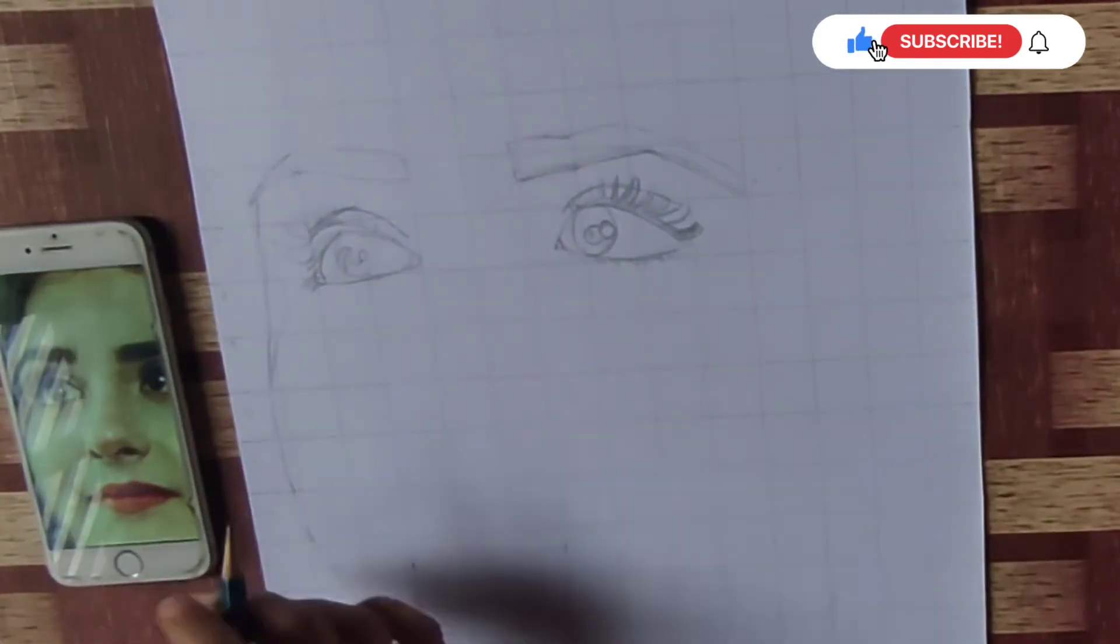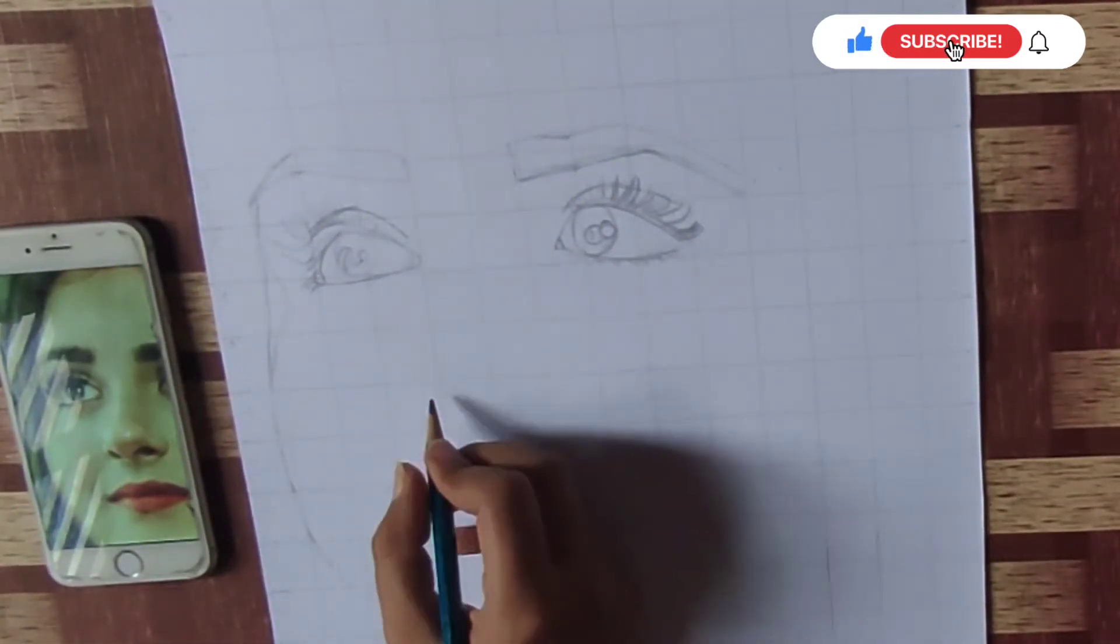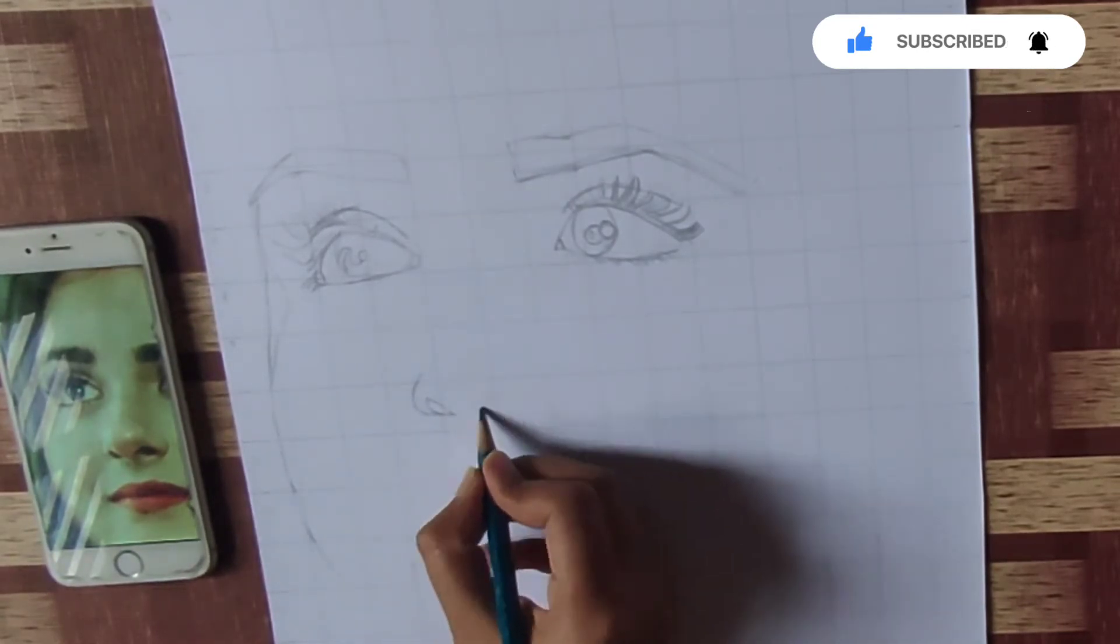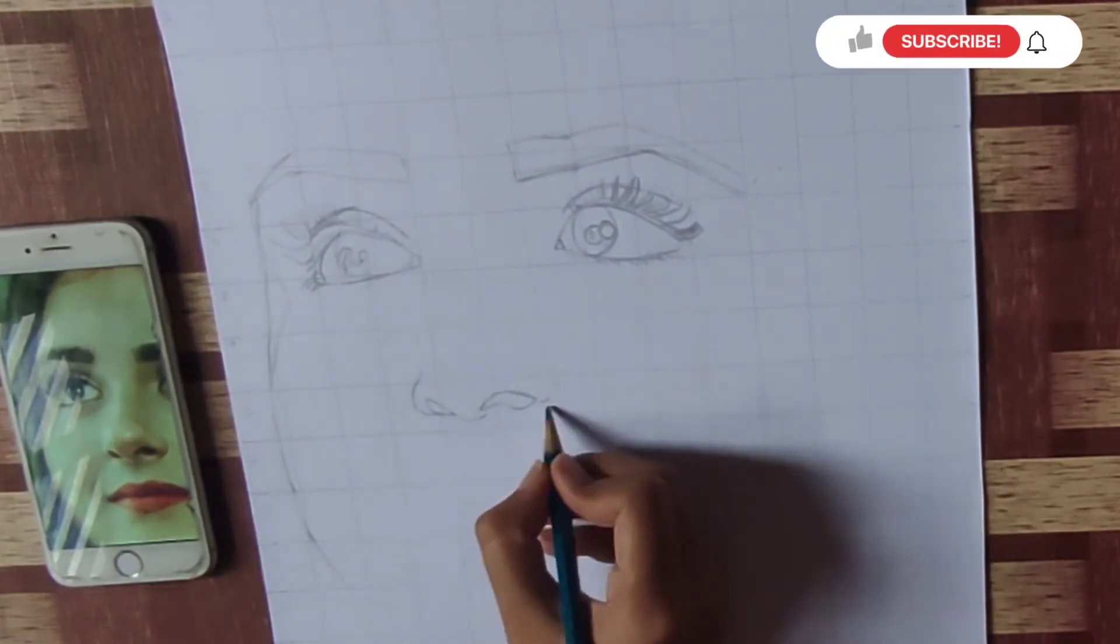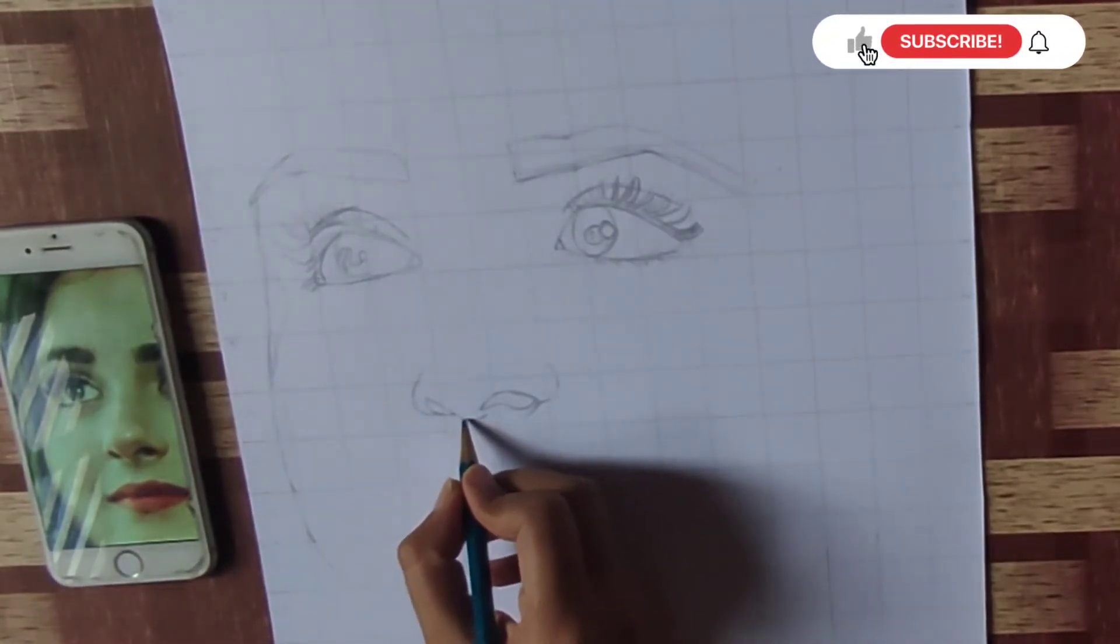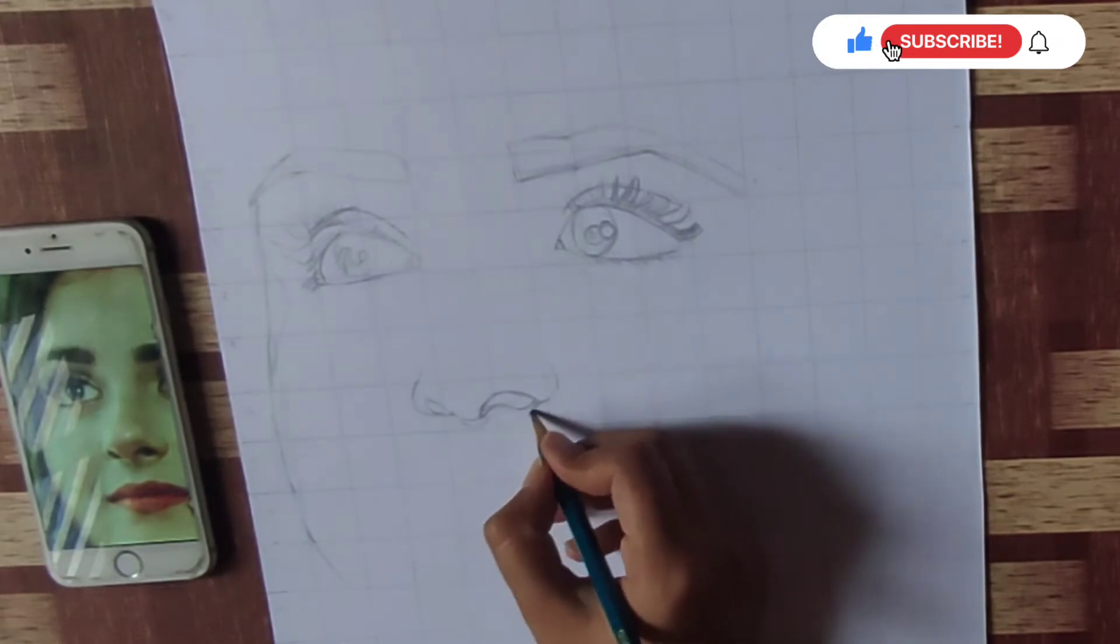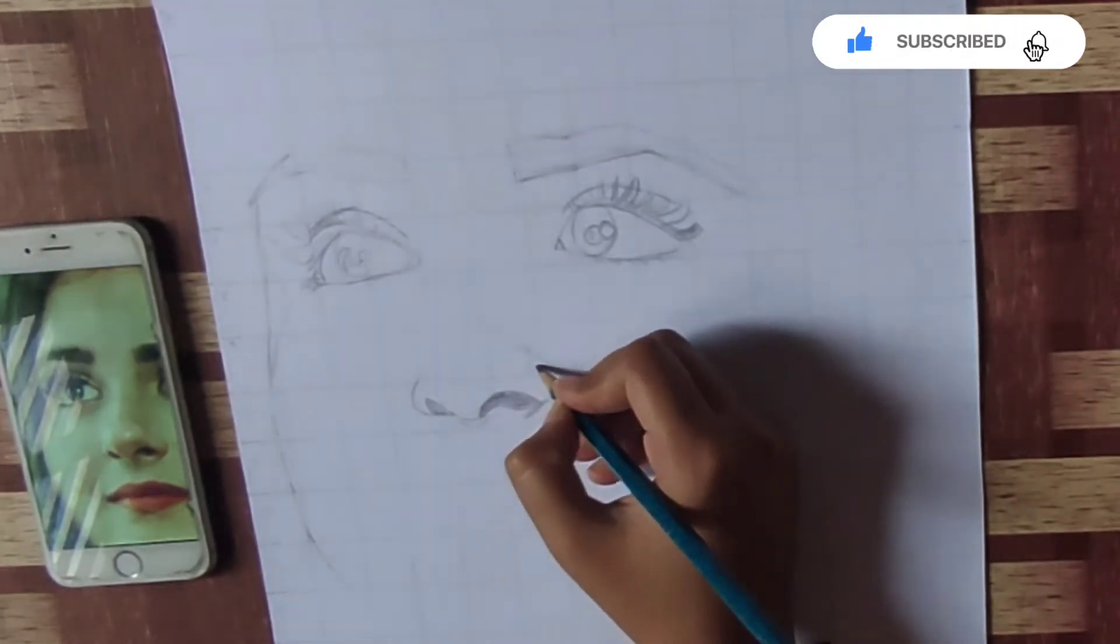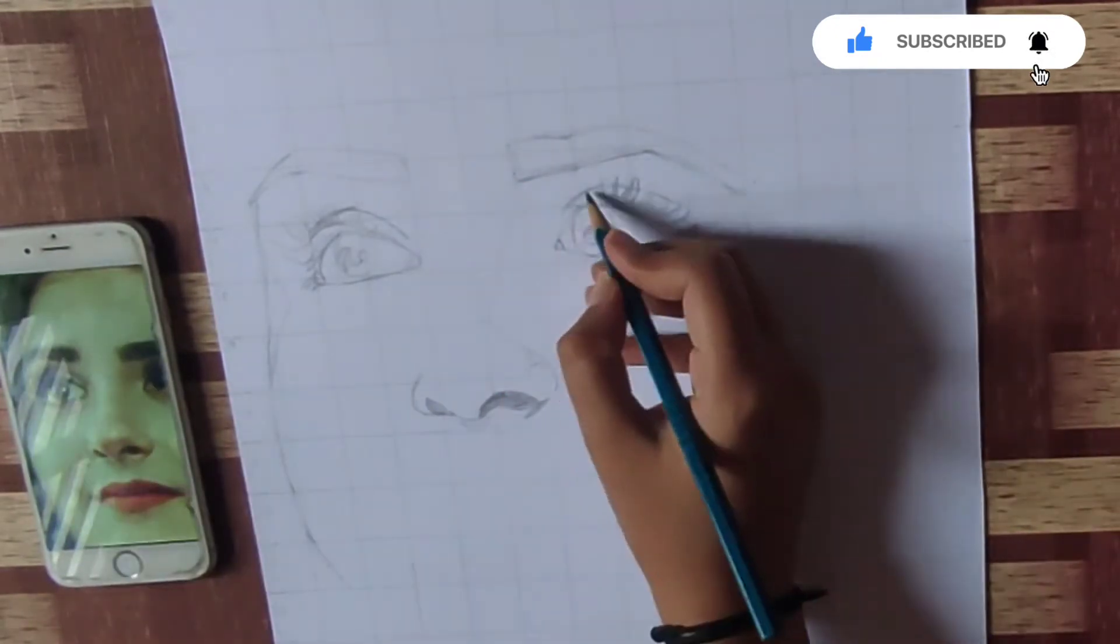I am going to draw this line. I am using the 2B pencil. Don't use more dark lines. Draw nose like this. I draw a little dark portion of the shadow.